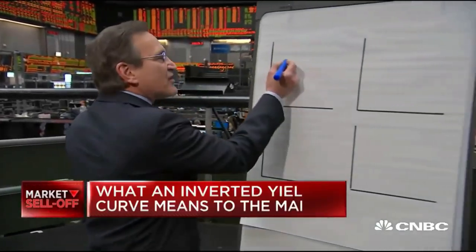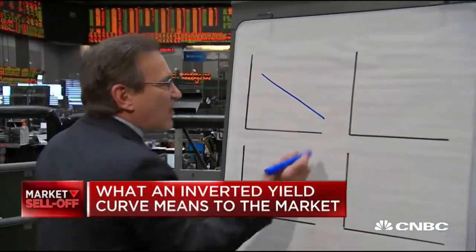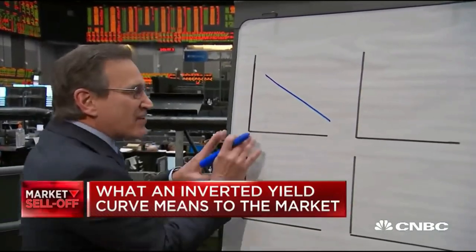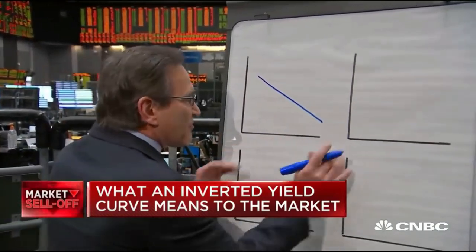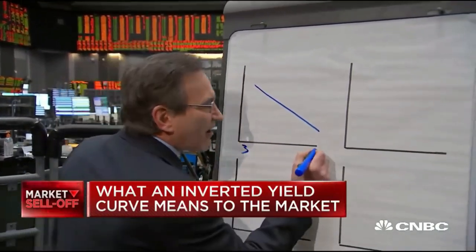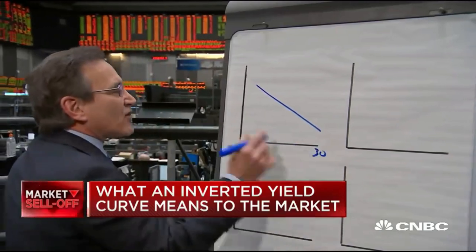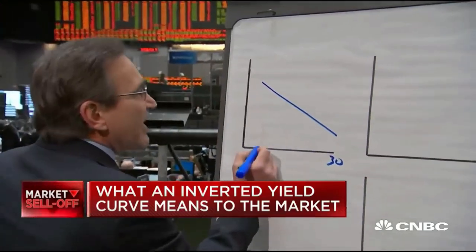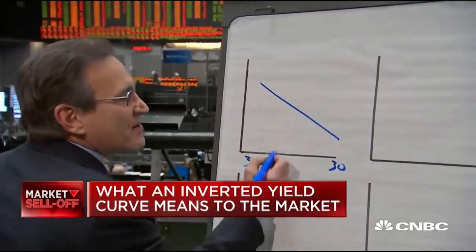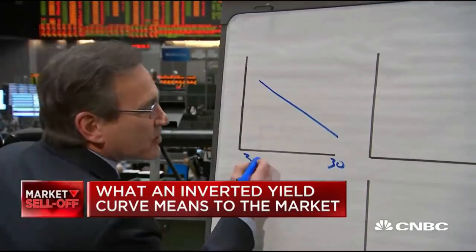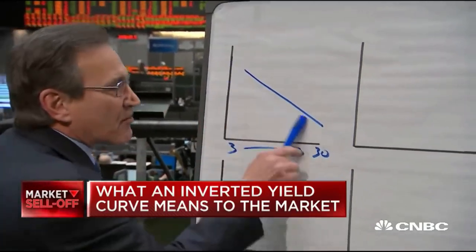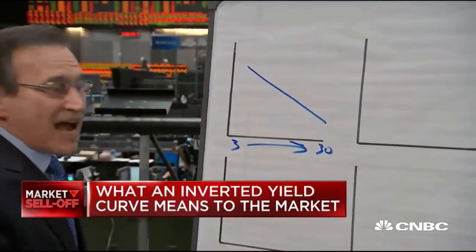Let's look at textbook yield curves, starting with an inverted yield curve. An inverted yield curve has maturities from three months out to 30-year in full inversion. These are yields, and as you go down into the maturity range to longer term, yields go down.